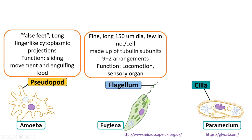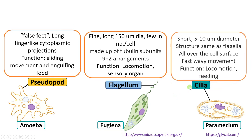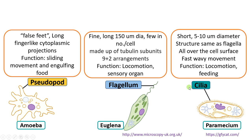Cilia are short structures, often present throughout the surface as in paramecium, and are five to ten micrometers in diameter. The structure is the same as flagella. Cilia cover all over the surface and ensure fast, wavy movement. Their function includes locomotion and also helping in feeding.